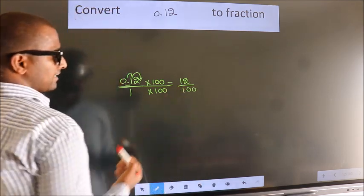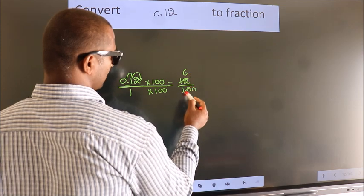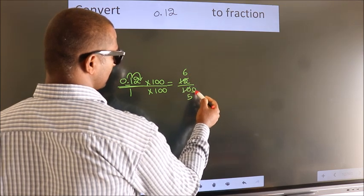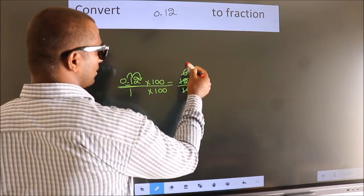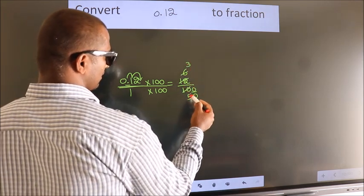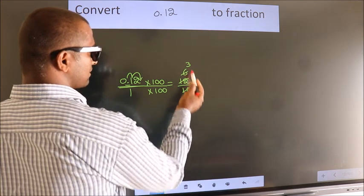Now, I cancel with 2. 2 goes into 12 six times, 2 goes into 10 five times. This 0 as it is down. Again, I cancel with 2. 2 into 6 is 3, 2 into 50 is 25. We cannot cancel further.